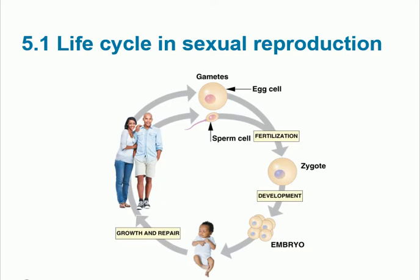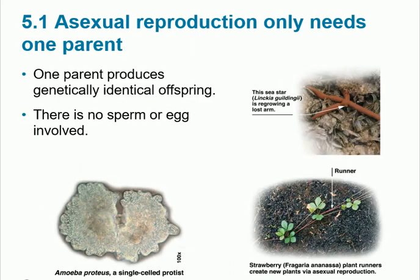The zygote develops into an embryo, and the embryo becomes a fetus. In the first two months it's called an embryo, then a fetus, then a baby after birth. Remember these concepts: gametes, sperm, ova, fertilization, zygote. Asexual reproduction on the other hand involves one parent producing genetically identical offspring — not unique.